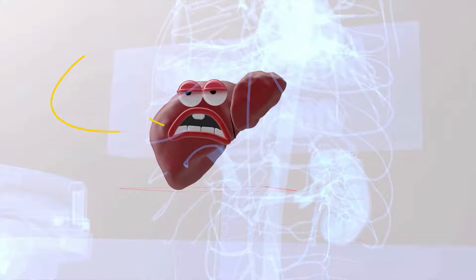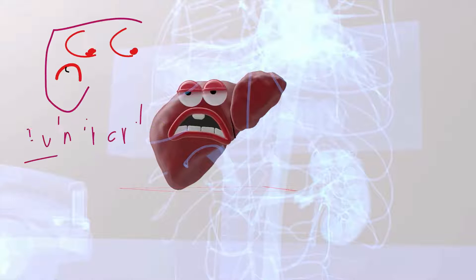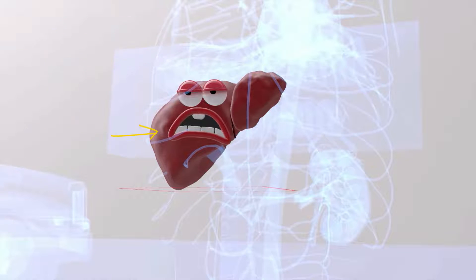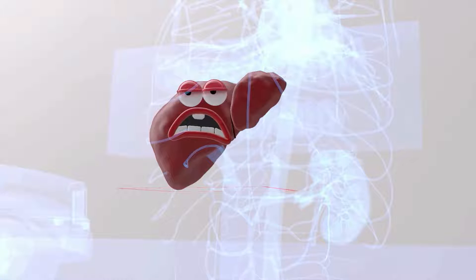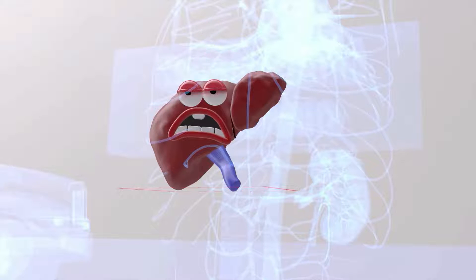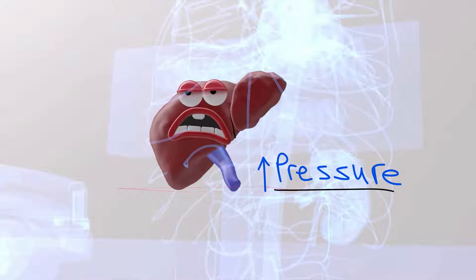Hepatorenal syndrome begins with a cirrhotic liver. It could also be due to fulminant liver failure, but since cirrhosis is most associated with hepatorenal syndrome, we'll talk about a cirrhotic liver. When a liver is cirrhotic — that is, it undergoes cirrhosis — scar tissue makes it difficult for blood to flow through the liver, and thus pressure builds up in the portal vein.